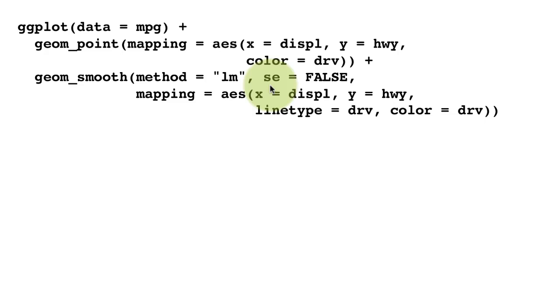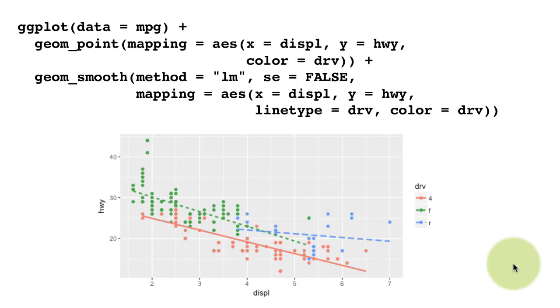So the net result of these two things will be that the lines that you get will be the linear regression lines for the three different types of drive. And you won't get the gray line for any of them. So that's what you get now.